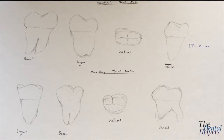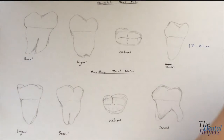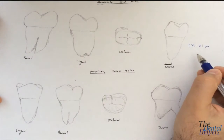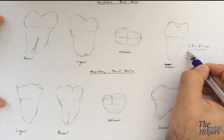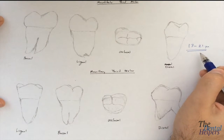We're going to go over third molars. Third molars typically erupt around 17 to 21 years old.